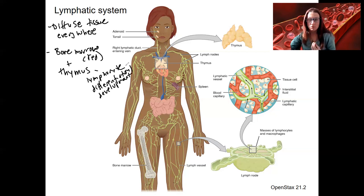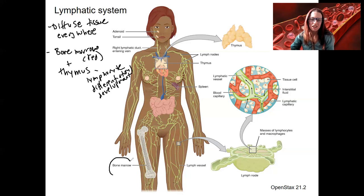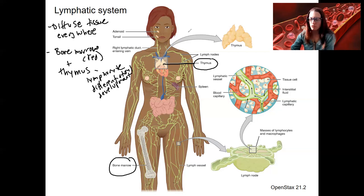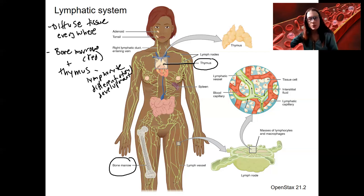Bone marrow is right inside your bones. In adults, that is primarily in the epiphyses of long bones — recall that. And the thymus is right here. You saw this, and you will see this in the rats — you may have gotten it confused with the thyroid gland. It is right above the heart, not on the trachea like the thyroid is. So that's the job of those two organs.